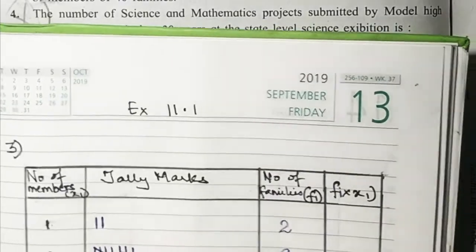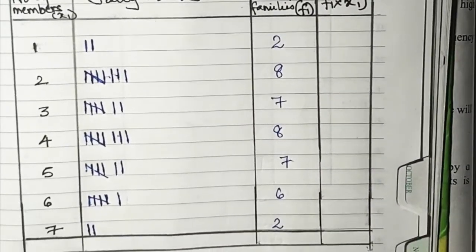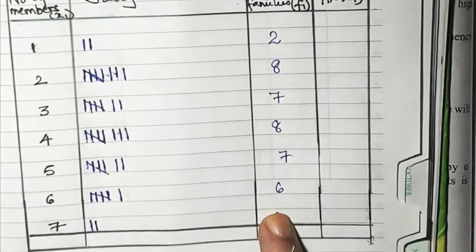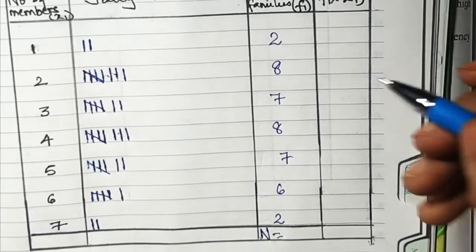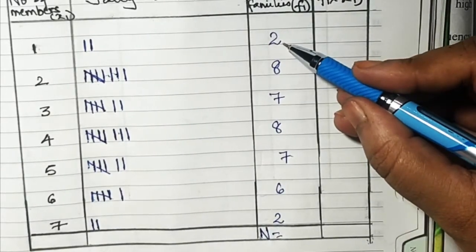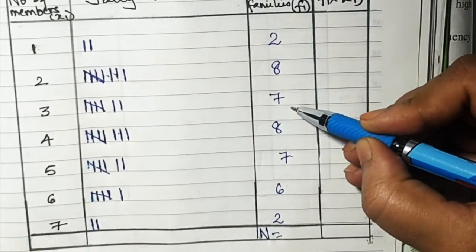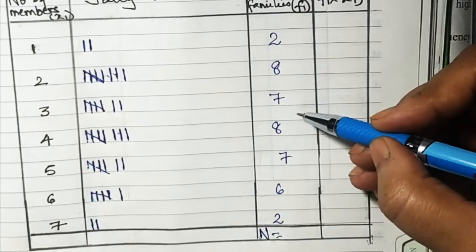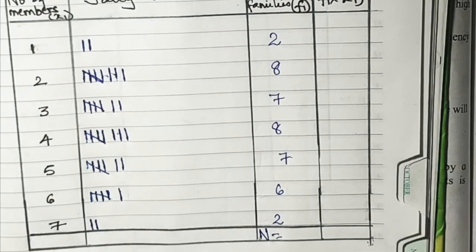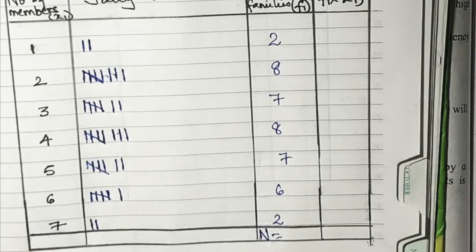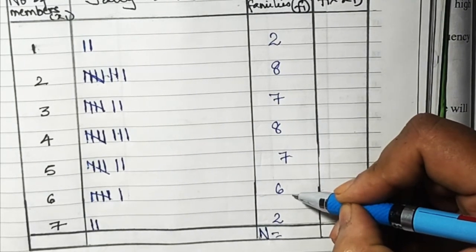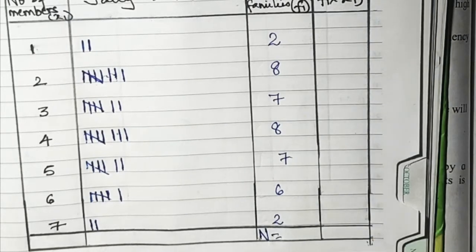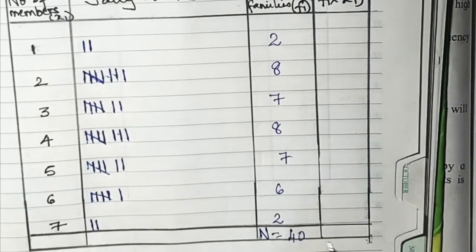Now once this is done, you have to find the total, that is n. N equals eight plus two is ten, ten plus seven is seventeen, seventeen plus eight is twenty-five, twenty-five plus seven is thirty-two, thirty-two plus six is thirty-eight, thirty-eight plus two is forty.